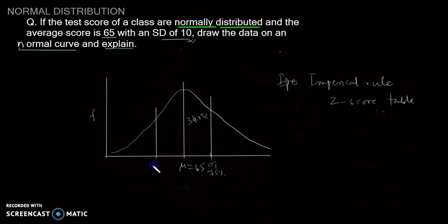At minus sigma 1, which equals a score of 55, the percentage of students between 55 and 65 is again 34.13%. As we move to the next standard deviation, sigma 2, the score is 85.